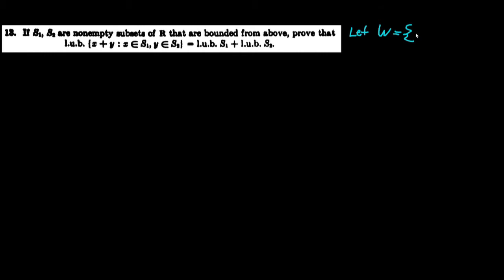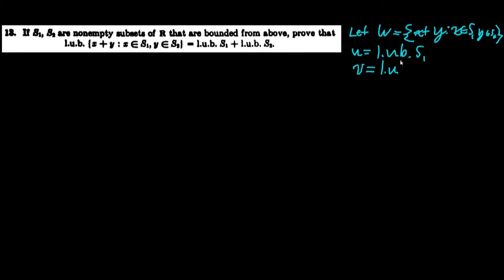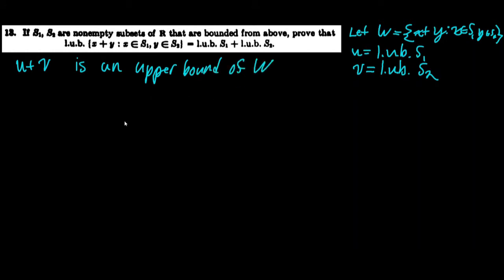To prove part two, let me restate: let W equal {x + y : x ∈ s1, y ∈ s2}, u equal the least upper bound of s1, and v equal the least upper bound of s2. We know u + v is an upper bound of W. To prove our result, if we can prove u + v is the least upper bound of W, then we're done since that equals the least upper bound of s1 plus the least upper bound of s2.